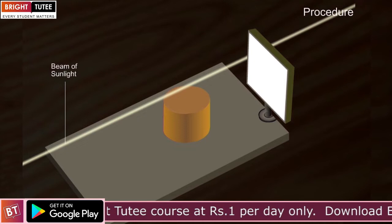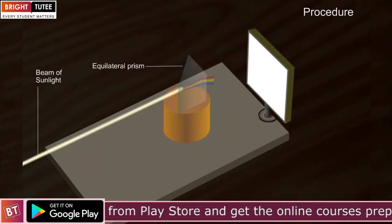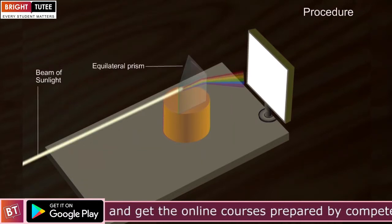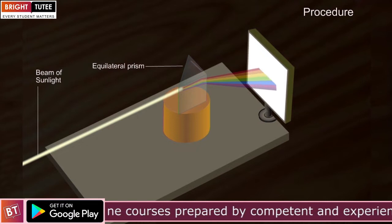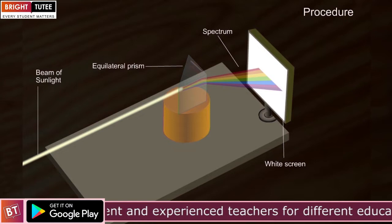Newton allowed the sunlight to enter through a small hole in a window of a darkened room. He placed an equilateral prism in the path of the narrow beam of light, and the light emerging from the prism was allowed to fall on the white screen.